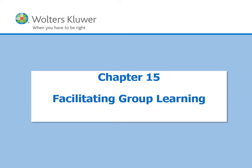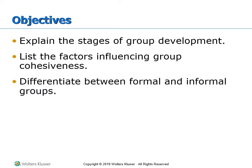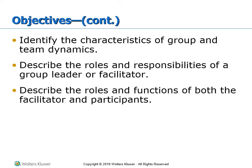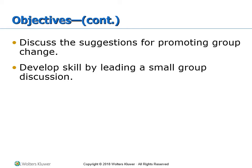In this chapter we'll be discussing facilitating group learning. The objectives are to explain the stages of group development, list the factors influencing group cohesiveness, differentiate between formal and informal groups, identify the characteristics of group and team dynamics, describe the roles and responsibilities of a group leader or facilitator, describe the roles and functions of both the facilitator and participants, discuss suggestions for promoting group change, and develop skill by leading a small group discussion.